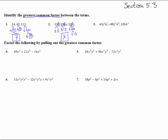Number 3. Looking at these, we have J squared and J squared in two terms, but no J squared in the third one, so the J's are out — can't use those. We have K squared, K cubed, and K, so at least we have a K that's in all of them.